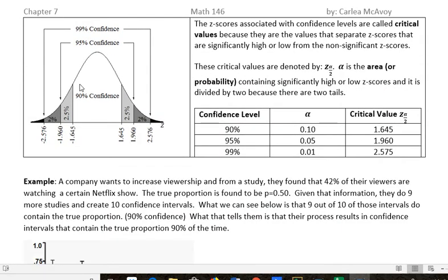Looking at those all at once, with 90% confidence you're talking about this space. With 95% confidence, you've got more values you're confident about and fewer that you're not. With 99%, we're confident about 99% of the values, and there's only 1% divided into two parts at the ends. The Z scores with confidence levels are called critical values because they separate the Z scores that are significantly high or low from the non-significant scores. These critical values are denoted by Z sub alpha over 2, divided by 2 because there's two tails.